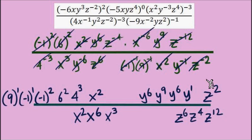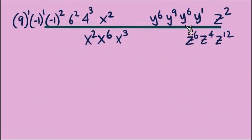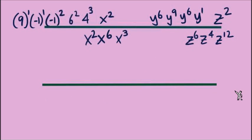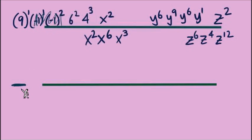Let's create a new blank fraction and start putting the numbers together. First, let's deal with the sign by looking at the negative ones. We have a total of three negatives, and an odd number of negatives means the answer is negative. I'll put the negative sign out front and that's taken care of. Now for the numbers: we have 9 times 36 times 64, which multiplied together gives 20,736.